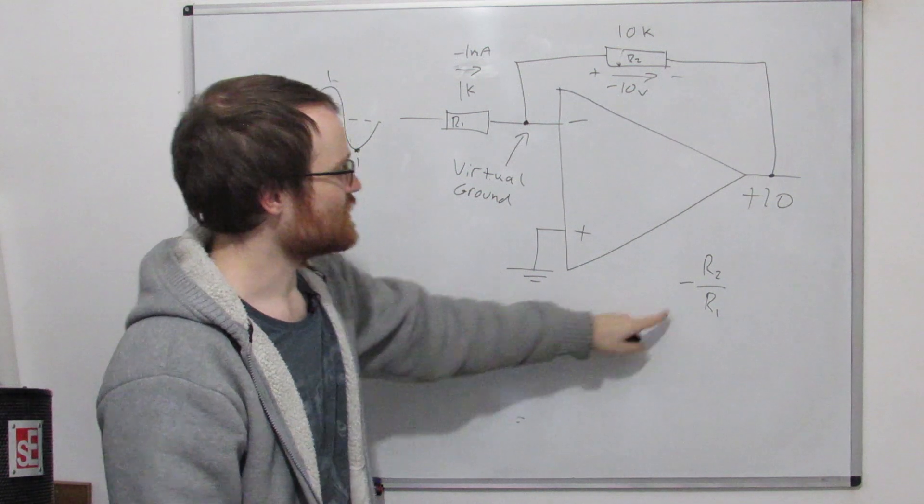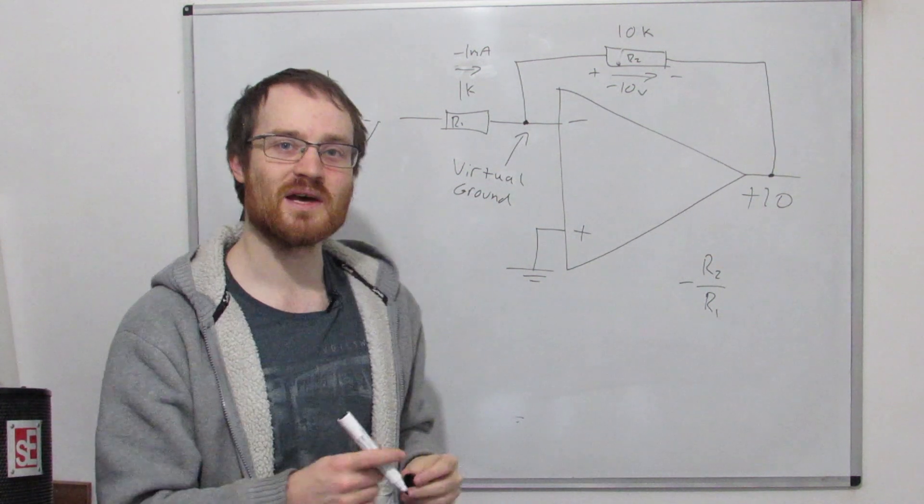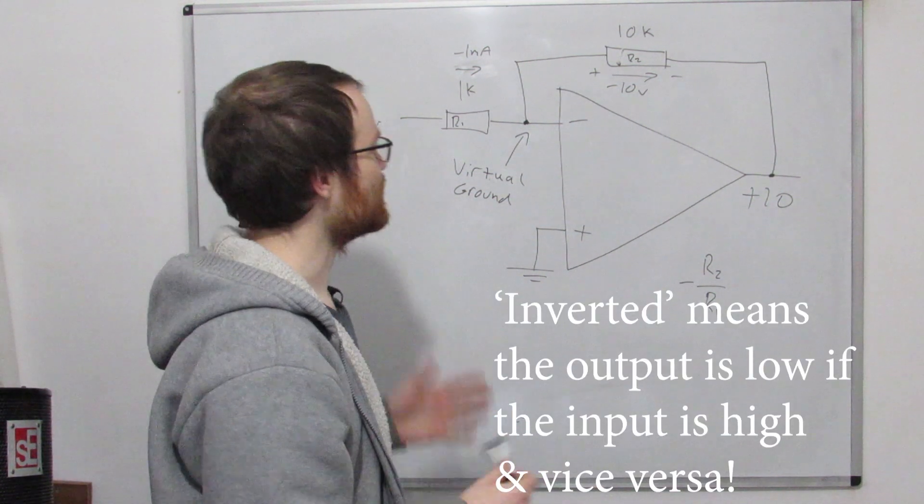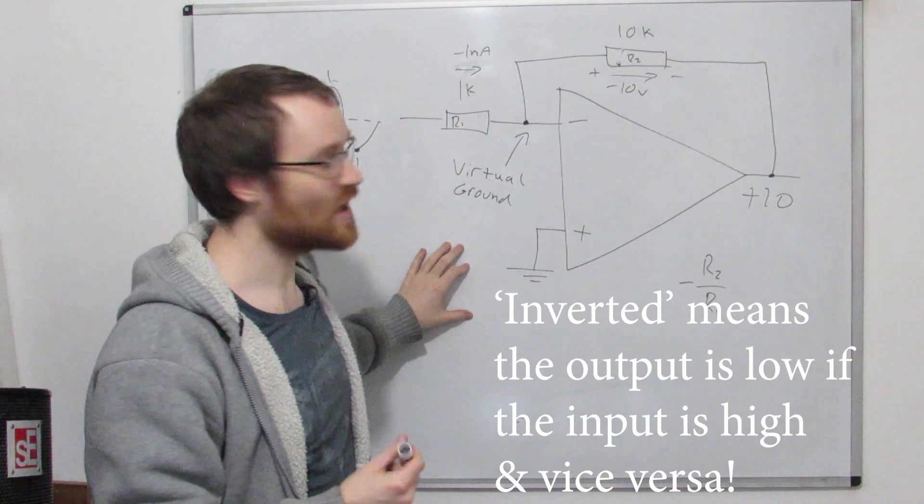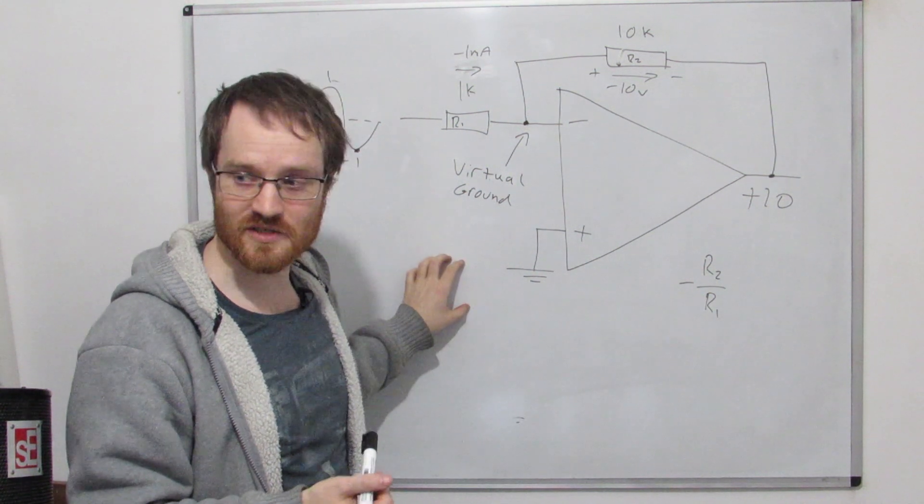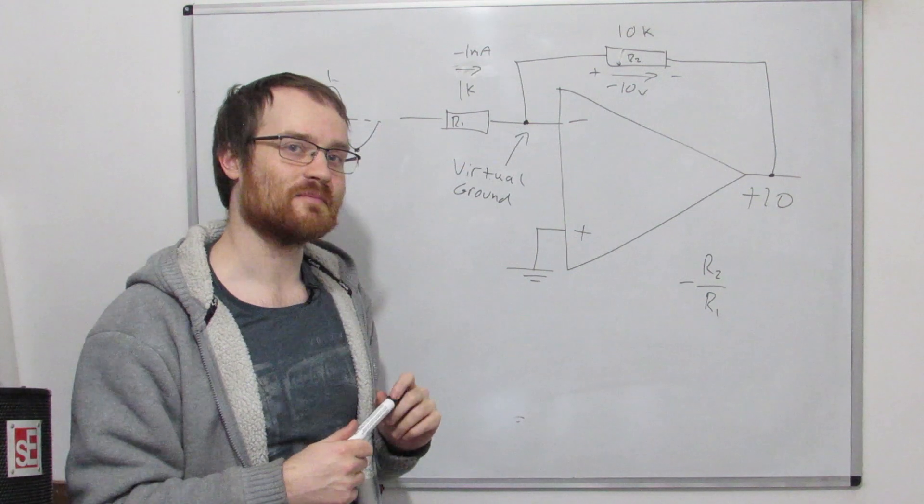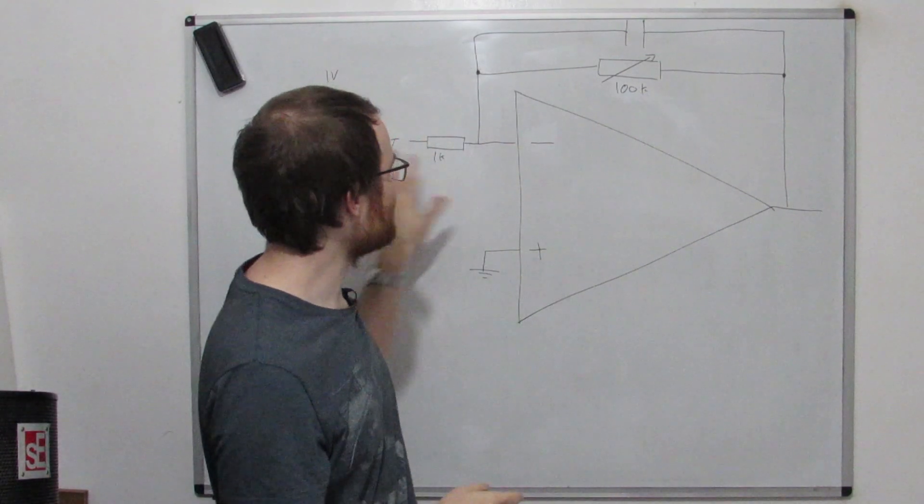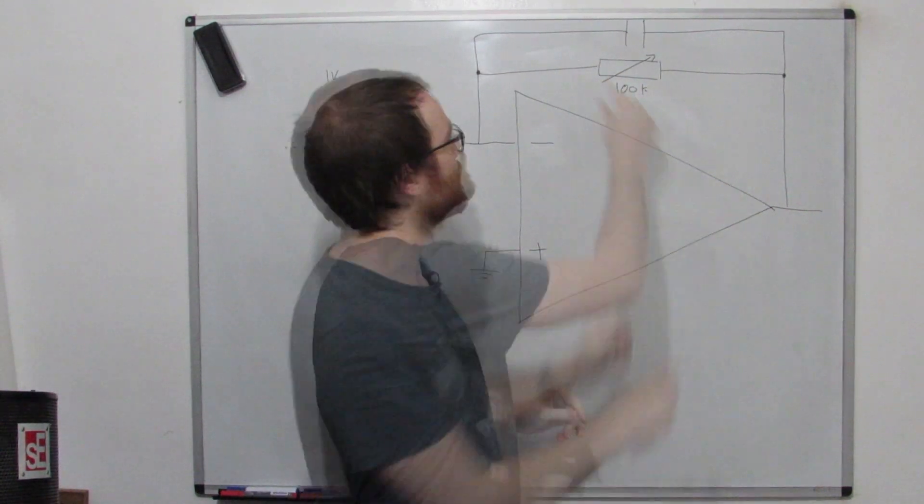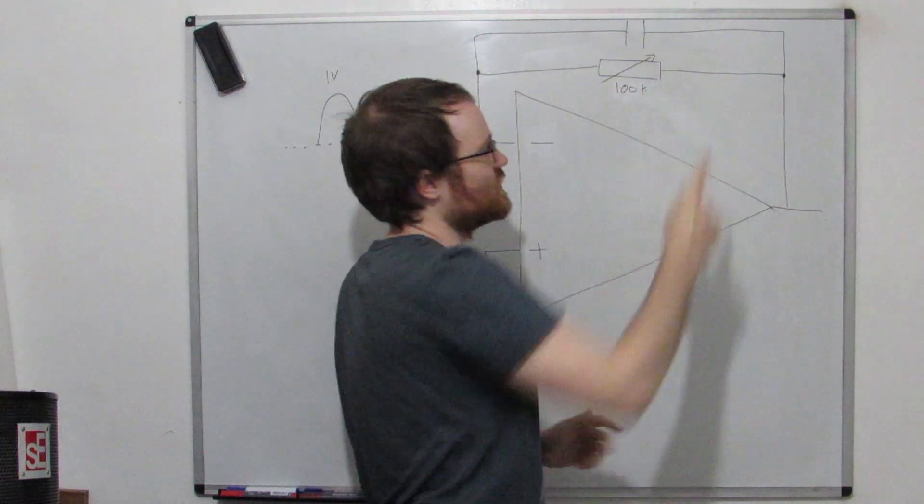So this time the gain is minus R2 over R1. This is R2, this is R1, and this minus just shows us, just telling us mathematically, that it's inverted. So this inverting amplifier configuration is the one that we're going to use to make our active filter. So we've taken the inverting op-amp configuration from before, and we just put a capacitor in parallel with the feedback resistor.